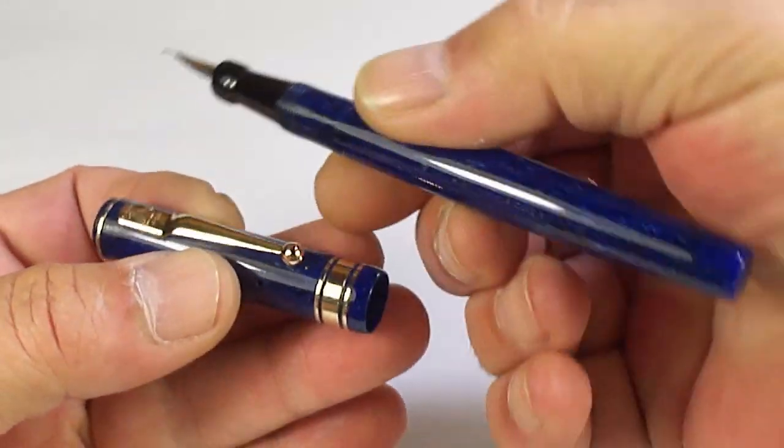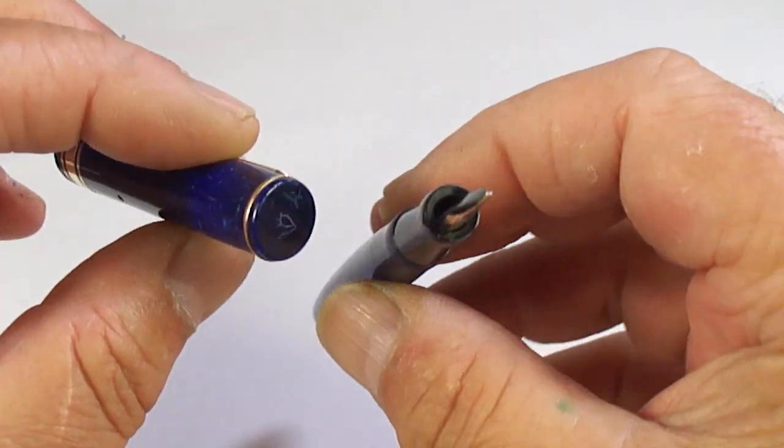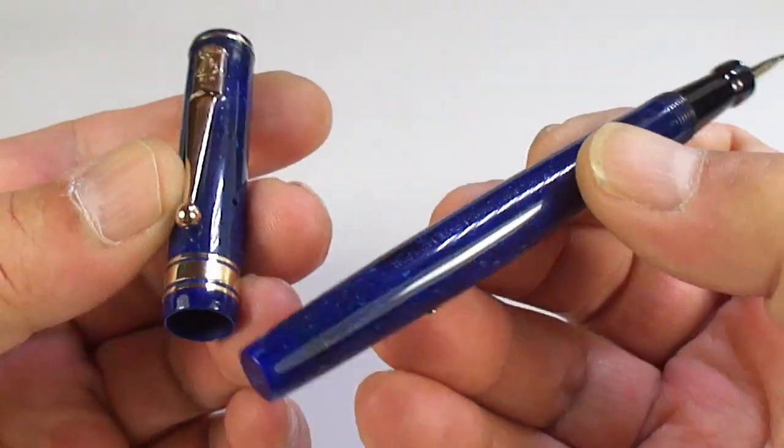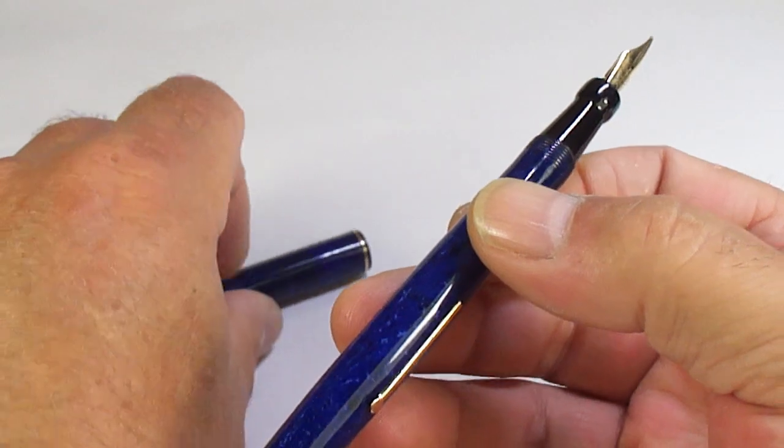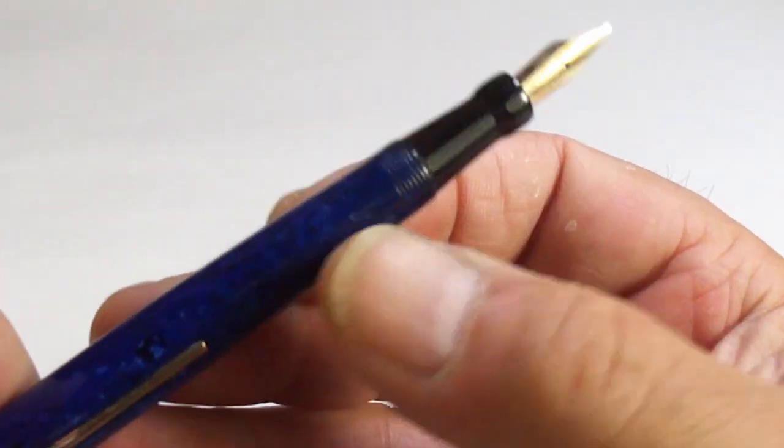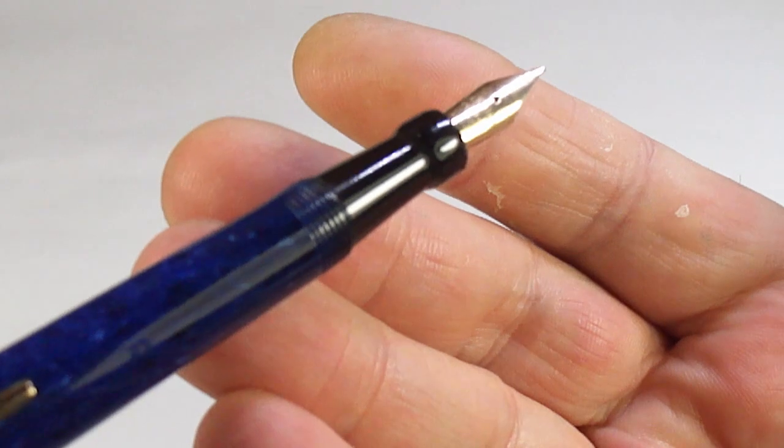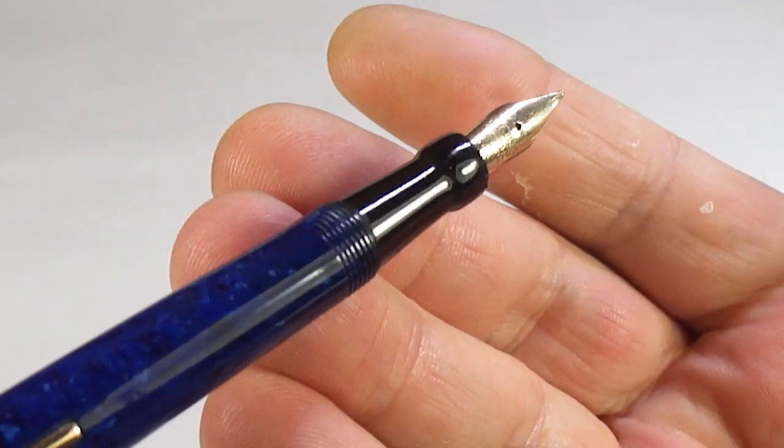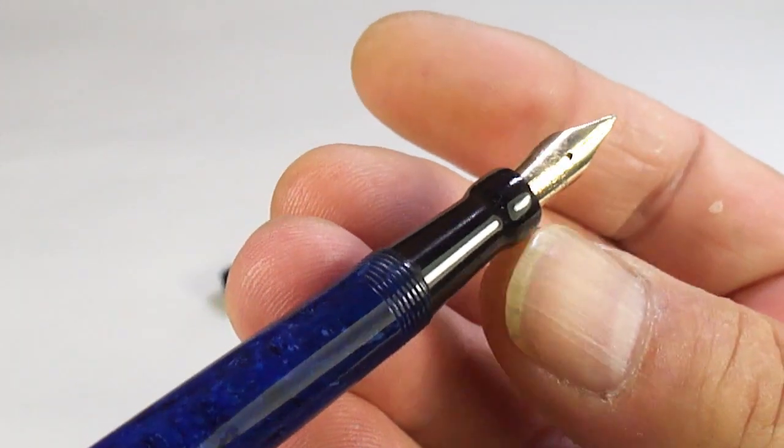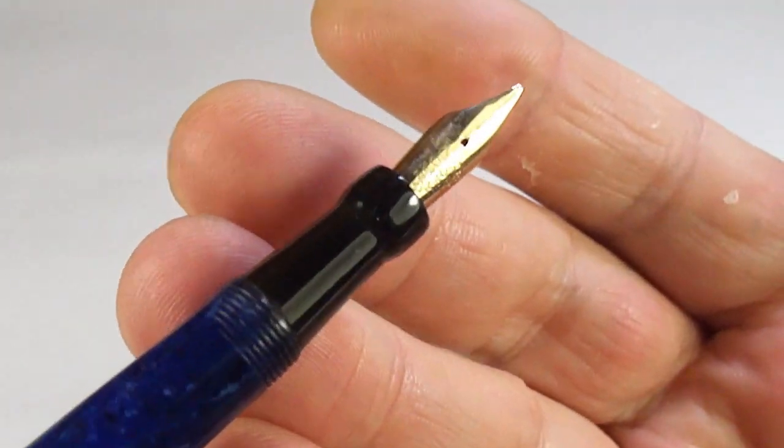Let's show you the pen in different angles like so. Beautiful color. As I said, we've put a new sack in it, so it's all ready to go as well. Let's take you up to the section. You can see the very sort of standard Swan black section there, this sort of ridge towards the nib.